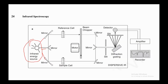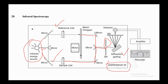To explain the diagram: we have an infrared energy source whose energy is divided by a mirror — one mirror serves as the reference and another as the sample path. The reference cell and sample cell both go into the beam chopper, and from the beam chopper the beams pass through mirrors, then through a slit, and through a diffraction grating system — this is the dispersive IR — then to the detector, then to the amplifier, and we get the spectrum.